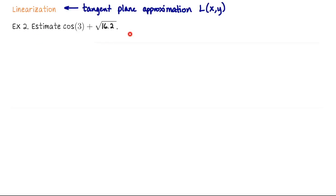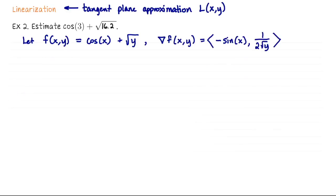Let's estimate cos(3) + √16.2. Define f(x,y) = cos(x) + √y. To write the tangent plane equation, we need the gradient: ∇f = ⟨-sin(x), 1/(2√y)⟩.